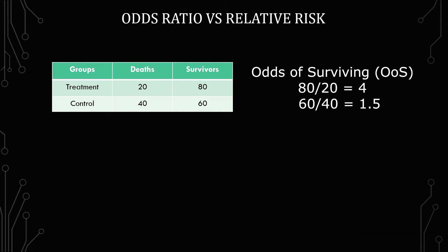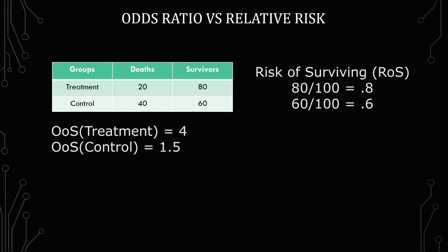Now, calculating the risk of surviving for treatment, we have 80 over 100, which gives us 0.8. And then for control, we have 60 over 100, which gives us 0.6.